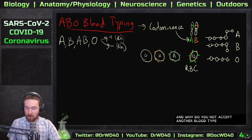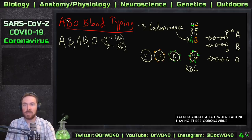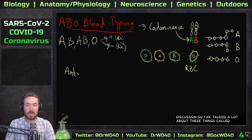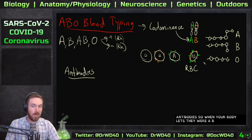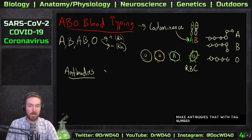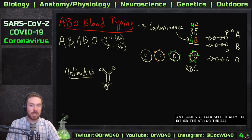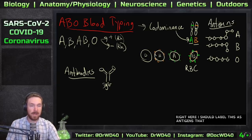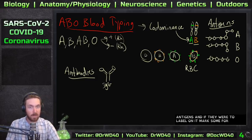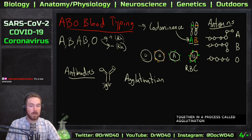We've talked a lot about antibodies in these coronavirus discussions. So if you were AB, and your body made antibodies to tag the A or B antigen — remember, an antibody is an immunoglobulin, an IgG — these variable regions on the antibodies tag specifically to either the A or B antigen on the surface of red blood cells. If they tag them, it marks them for your immune system to destroy.